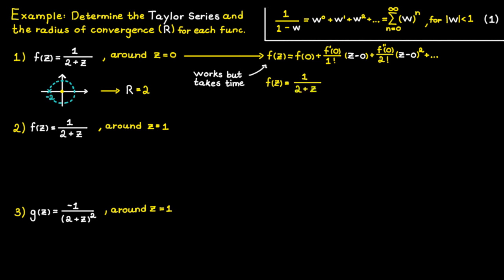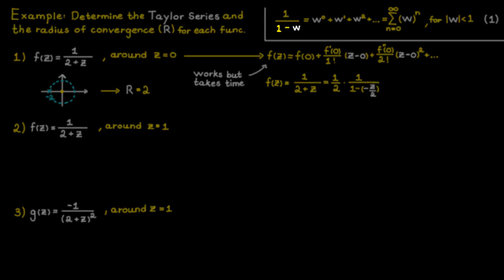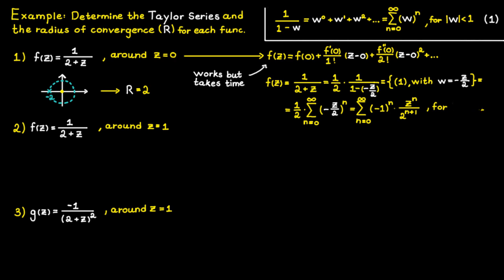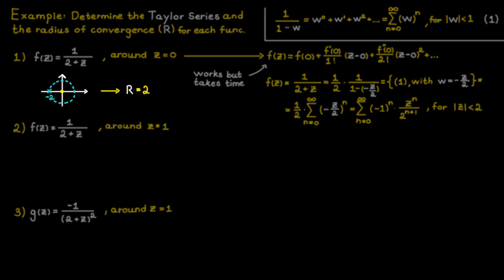To apply the geometric series to our function, we first need to create a one in the denominator, which we can do by factoring out one divided by two. Since we want the end result in powers of c, we want the second term to equal w in the formula, which is c times some factor. We have rewritten one plus c divided by two as one minus minus c divided by two, since we have a minus sign in the formula. Now we can use our geometric series with w equal to minus c divided by two. Factoring out minus one from the numerator and two from the denominator gives the final series. This series is convergent if the absolute value of c divided by two is smaller than one, which is the same as saying the absolute value of c should be smaller than two — which we already knew from our image.